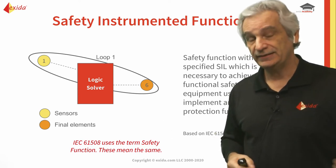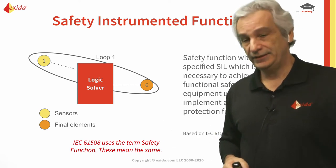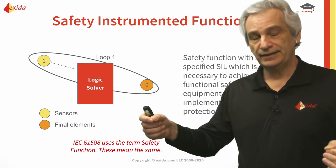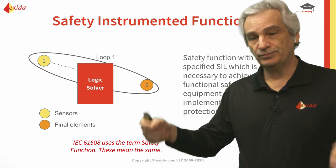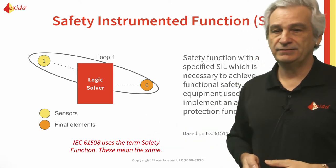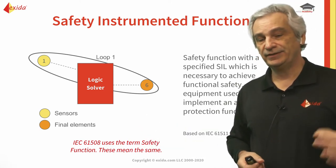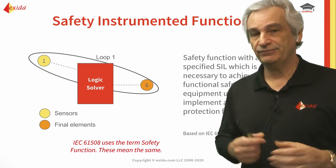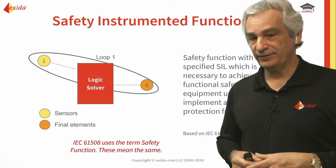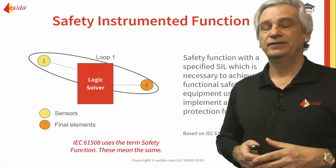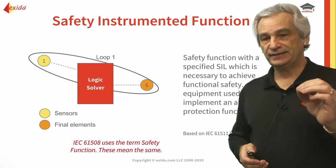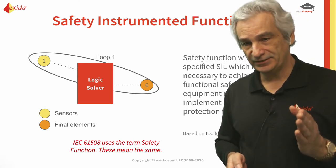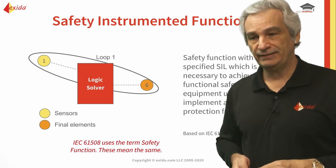So if it's a high pressure situation, it's a high pressure SIF — we need to detect the high pressure and we need to be able to take action to reduce that or bring us back to the safe state. The distinction between the SIS (the safety instrumented system) and the SIF (a single function) is very important, because it's that SIF that will have the designated safety integrity level — a specific SIL for that SIF.